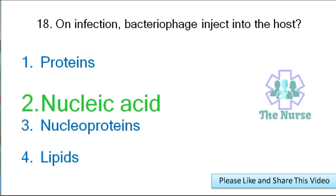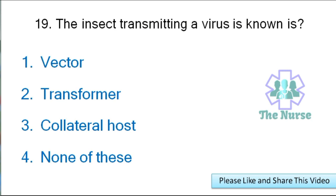Next question: The insect transmitting a virus is known as — vector, transformer, collateral host, or none of these? Correct answer: vector.